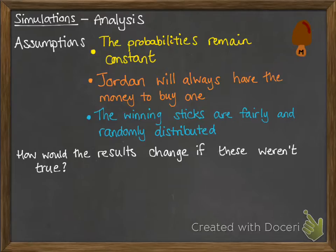The winning sticks are fairly and randomly distributed, so he has an equal — one in six — chance as stated in the problem. But if this wasn't true, he could have more or less chance. If the place he bought them from didn't get as many winning sticks as had been promoted, he'd have a lower chance. But if they got more winning magnums than stated in the promotion, he would have a better chance of winning.